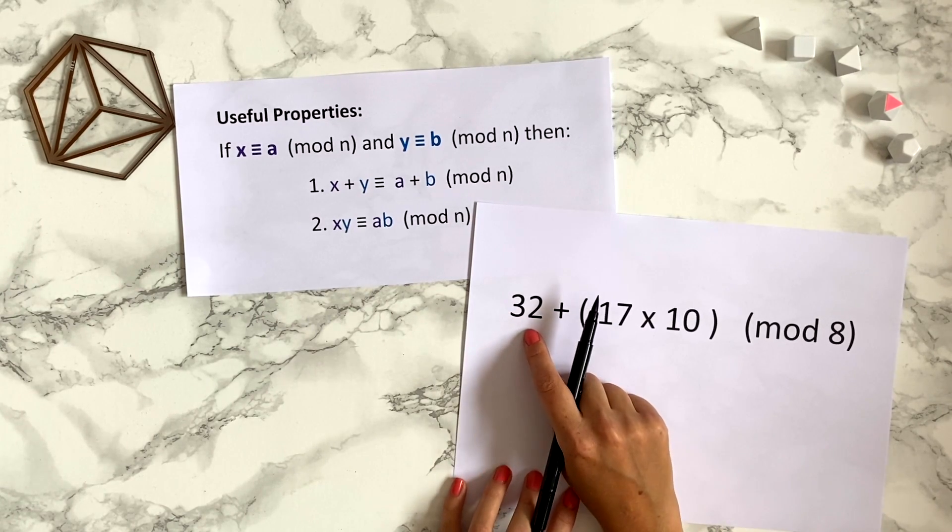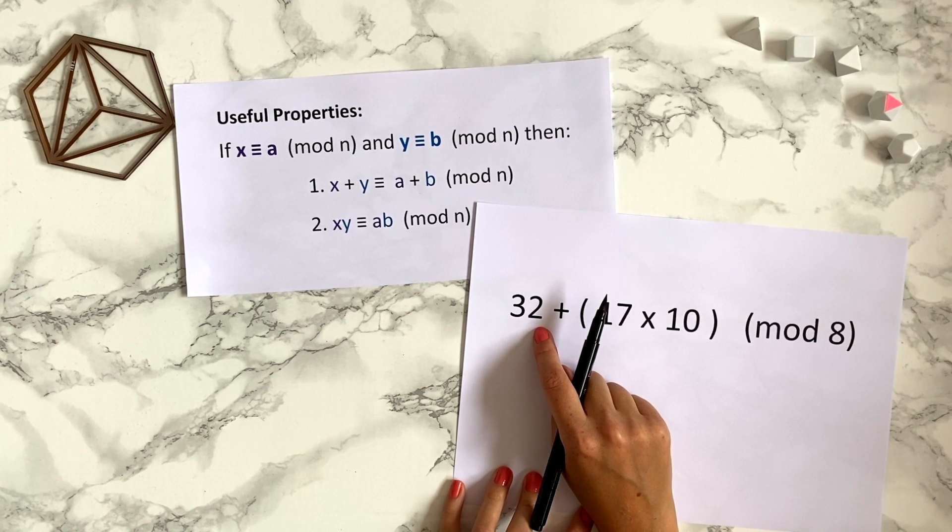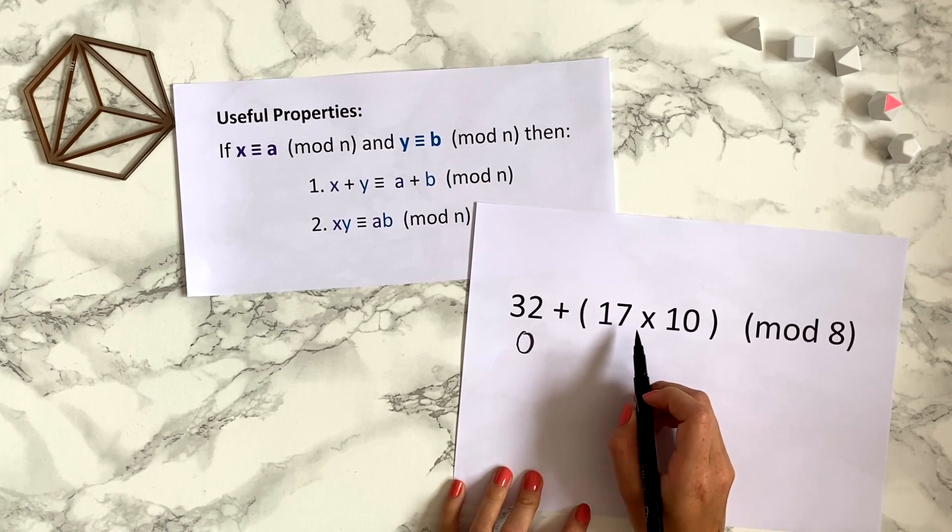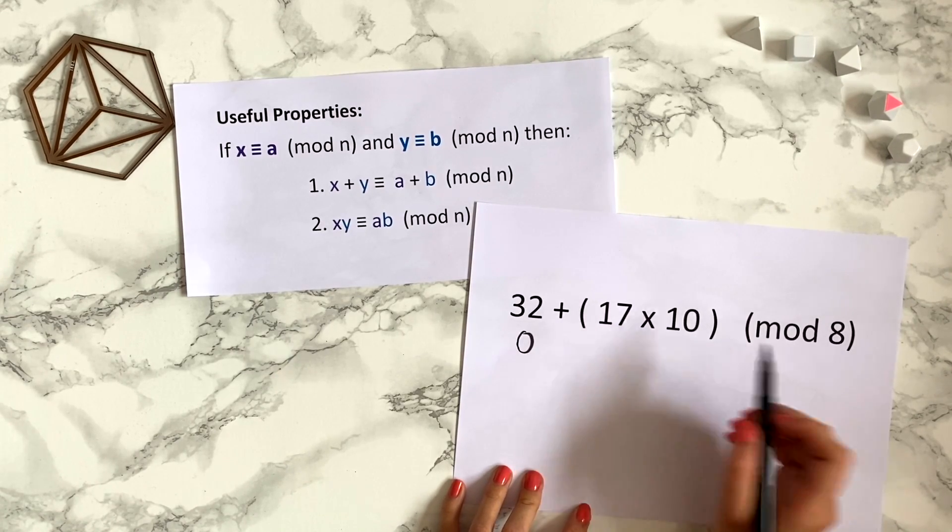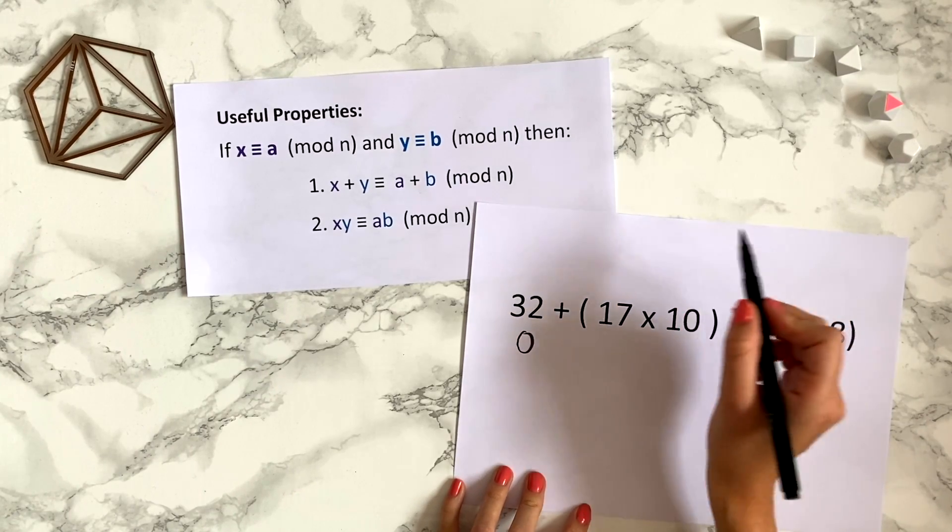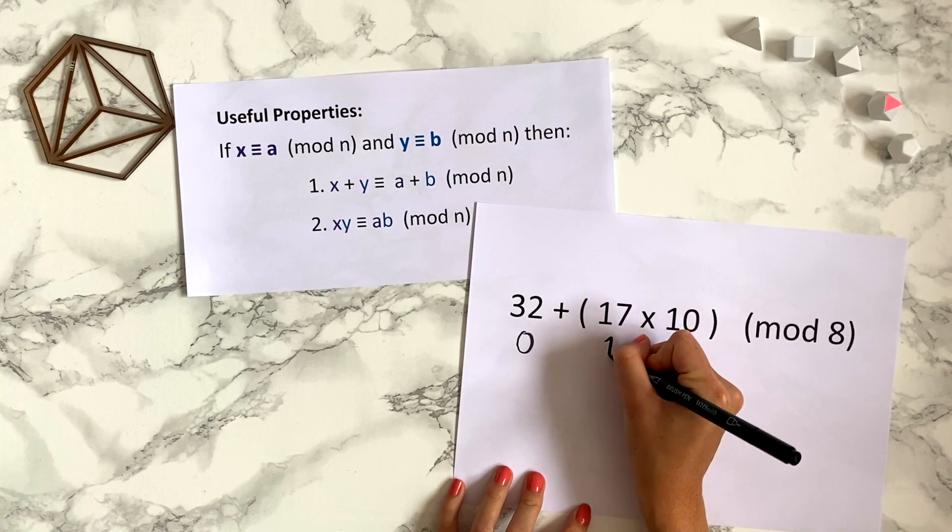So 32 modulo 8, well 32 is divisible by 8, so 32 is congruent to 0 mod 8. 17 mod 8, well 16 is divisible by 8. So 16 would be at the top of the 8 hour clock, so 17 would be congruent to 1 modulo 8.